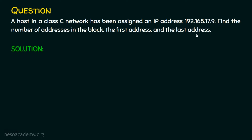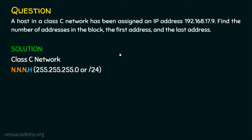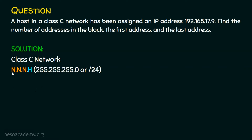Let's solve it now. We know it is a Class C network, which means three octets are the network portion and the last octet is the host portion. The default subnet mask is 255.255.255.0, or in slash notation, /24. Why /24? Because 24 bits are the network portion out of the total 32 bits, and only 8 bits remain as the host portion. Any IP starting with 192.168.17 will belong to this network.